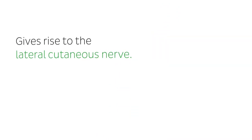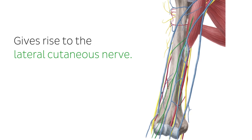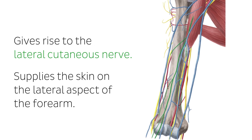The musculocutaneous nerve emerges laterally to the biceps tendon, where it gives rise to the lateral cutaneous nerve, which supplies the skin on the lateral aspect of the forearm. It is of interest to note that the musculocutaneous nerve can have a varied anatomical course and it often adheres to the median nerve and interacts with it.